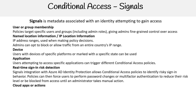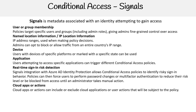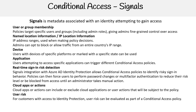Then you have cloud apps or cloud actions. Cloud apps or actions can include or exclude cloud applications or user actions that will be subject to policy. Then there's user risk — for customers with access to Identity Protection, user risks can be evaluated as part of the conditional access policy. User risk represents the probability that a given identity or account is compromised.